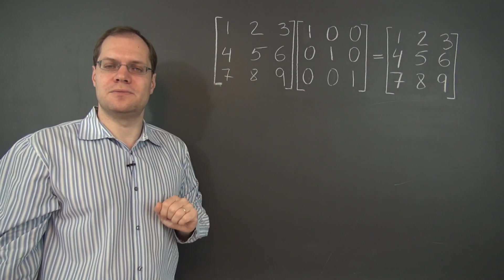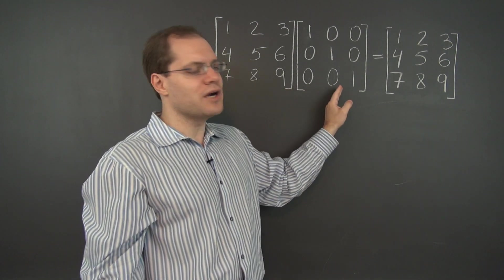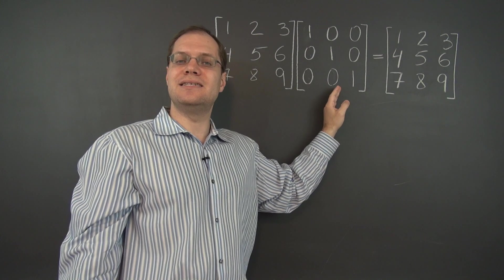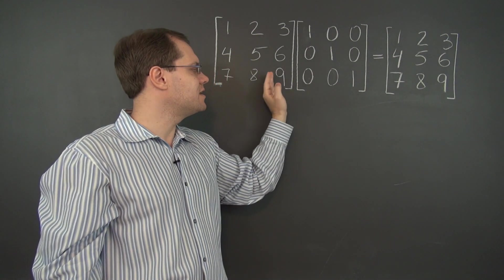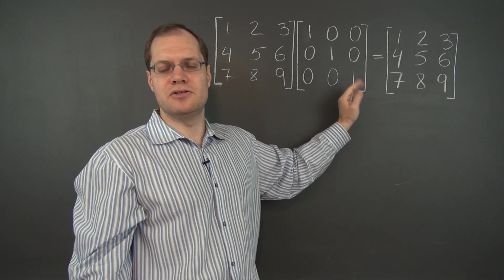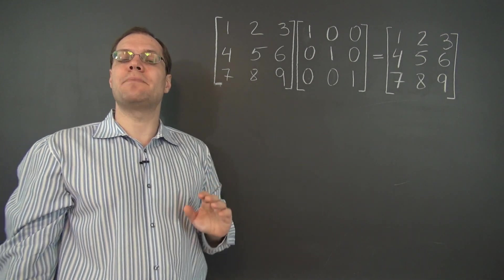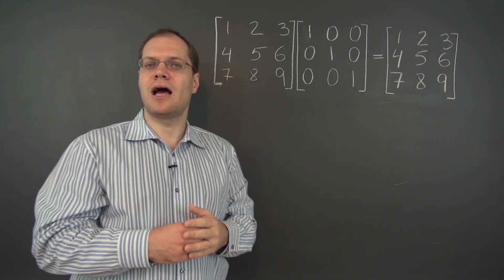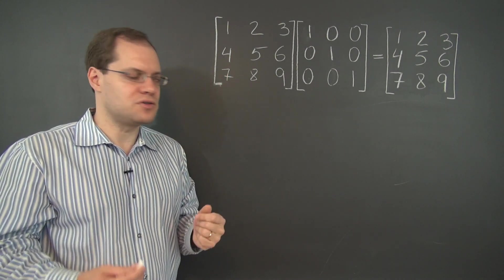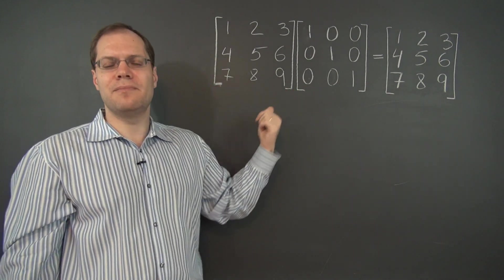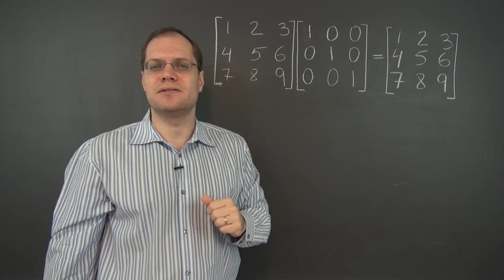And for now, we have to be a little bit careful and call it the right identity. It's the matrix that leaves the other one unchanged when it appears on the right. Now, what happens when it appears on the left? A priori, there's no reason to expect that we would get the same answer because the order matters. So let's see what happens.